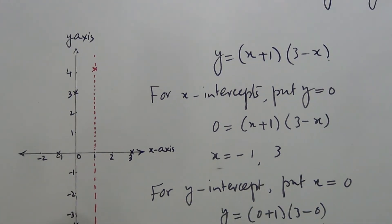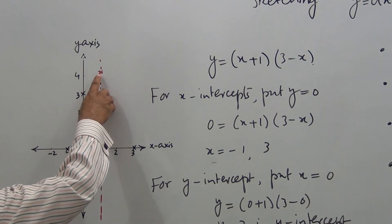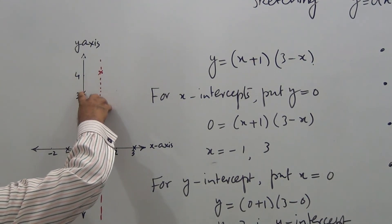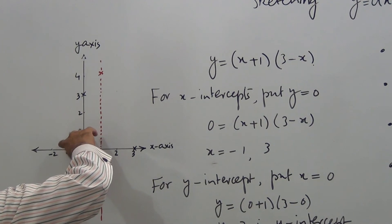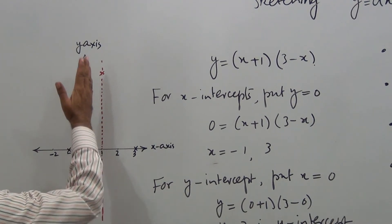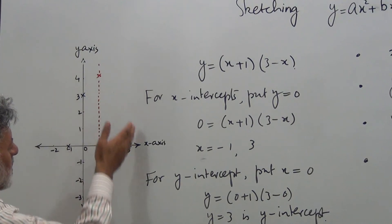Now what I will do, I will run a soft and smooth curve through these three points, and using symmetry, I will make the other part of the curve on this side.